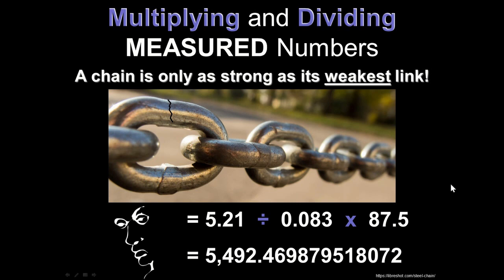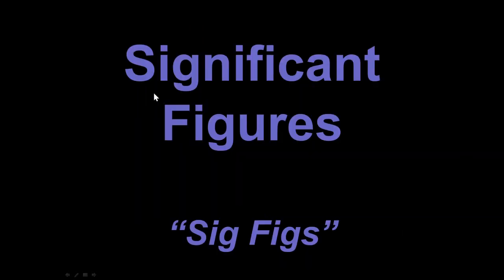This was the rule for addition and subtraction, which implies there's a different rule for multiplication and division — we have to understand there are two different rules. For addition and subtraction we look at degree of precision, but when multiplying or dividing we do something else. Significant figures — abbreviated SIGFIGs — will allow us to decide which number is our weakest link for multiplication and division.